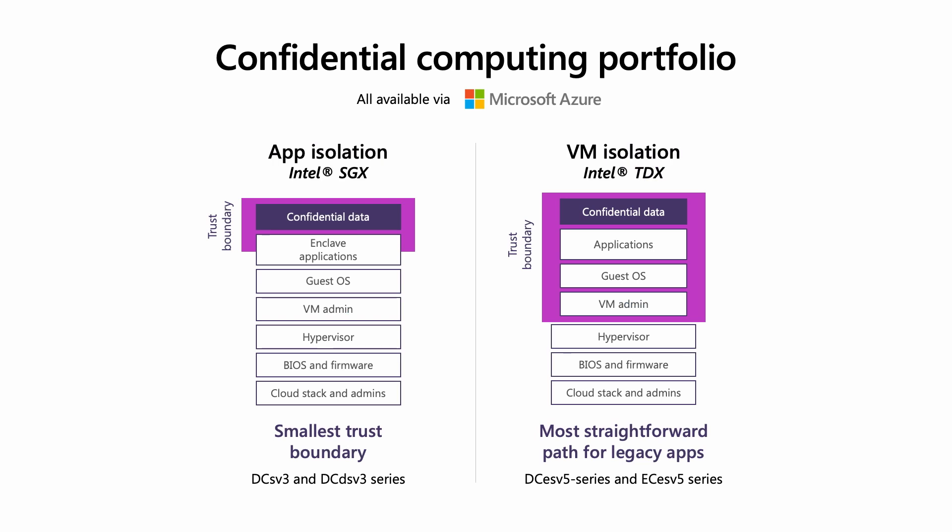We've worked very closely with Intel on Intel SGX technologies. This enables you to achieve the smallest trust boundary for your workload — it enables you to even protect your data from your own VM admins. However, for organizations looking for an easier path to confidentiality for their legacy applications, Intel TDX-based confidential virtual machines helps you address this path, and it's as simple as provisioning and deploying a virtual machine, which we're going to demo.